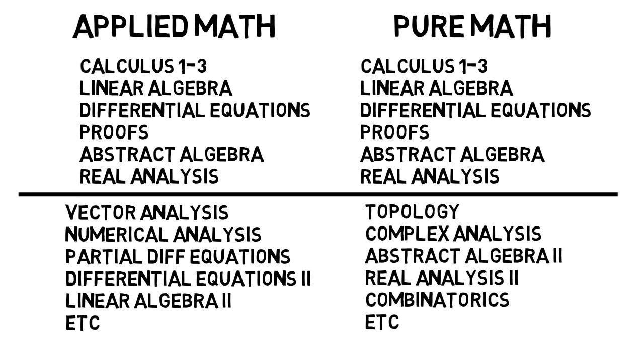Whereas a pure math student might take topology, complex analysis, more abstract algebra, more real analysis, combinatorics, and so on. But this does not account for everything, and it will differ slightly from school to school. Like both these disciplines might take complex analysis, because it does have a lot of real world applications. At some schools it could be required, and others you might be able to choose it as an elective, but it's still a very popular class either way. Overall most of what you see here you can expect in those respective fields, but many higher division electives are up to you.